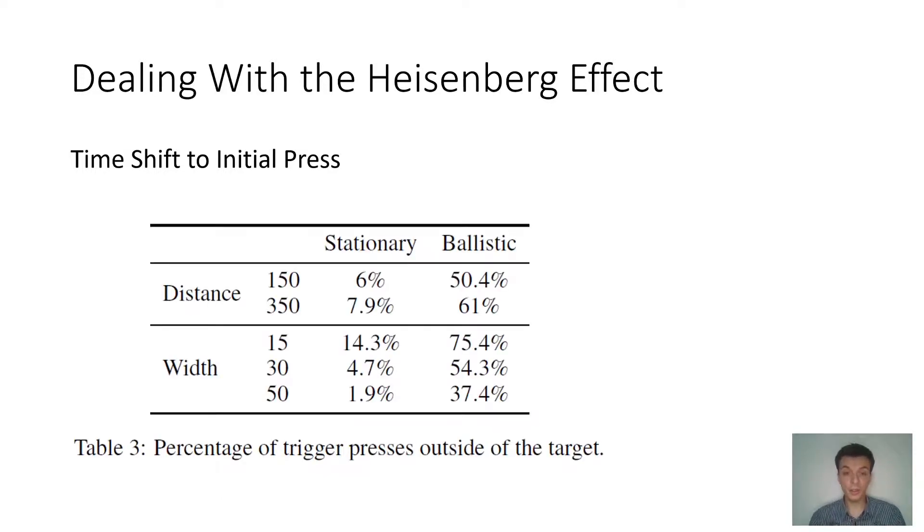Well, if we look at where the participants started clicking or pressing the button, we can see that it usually happened outside of the target, especially for the ballistic condition, which is closer to reality. We can see that even for the largest targets, we still had 37.4% of selections that had started outside of the target. So accepting this initial press position as the final selection would lead automatically to an error of at least 37.4% in the conditions we used. This is higher than the Heisenberg error that we observed in the ballistic condition and almost as high as the overall error.